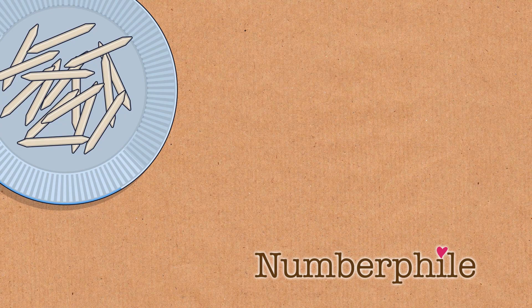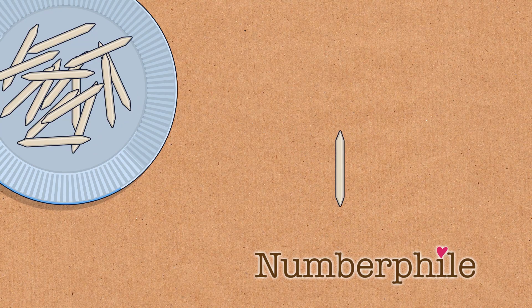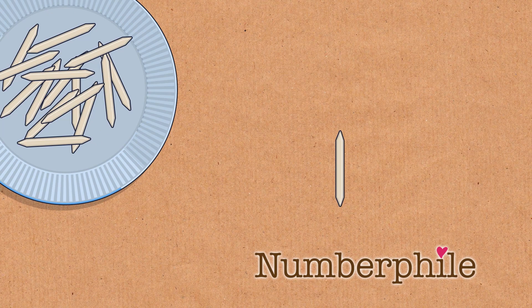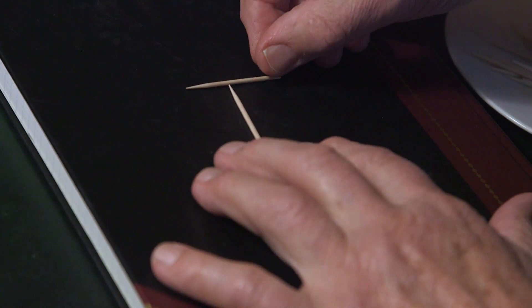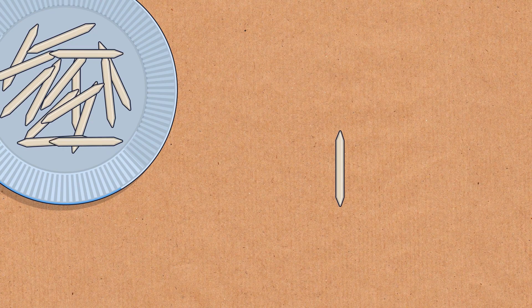We're at the kitchen table and we have toothpicks. We put down one toothpick and we notice it has two ends. So at each end, we put a toothpick. The toothpicks are all the same length, ideally. We started with one and we added two.